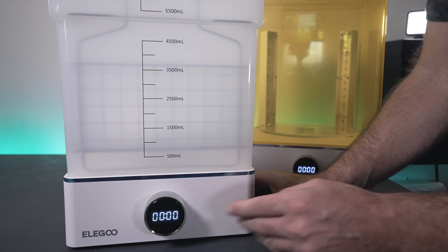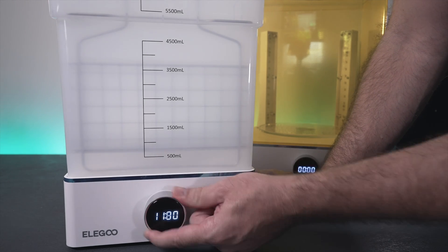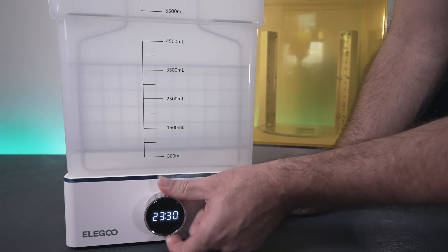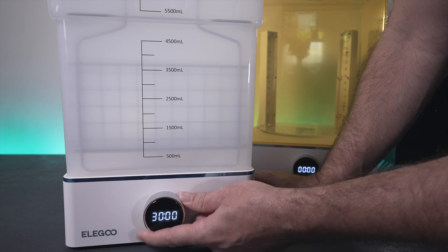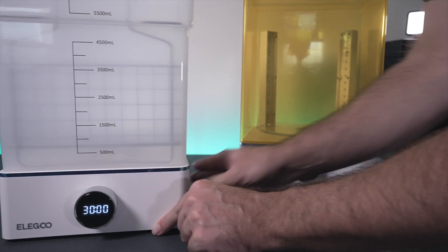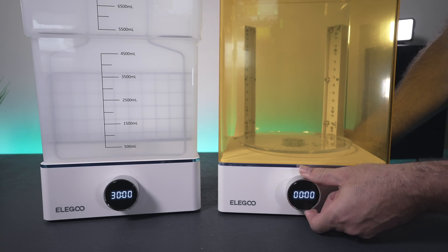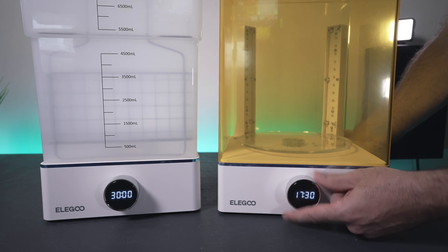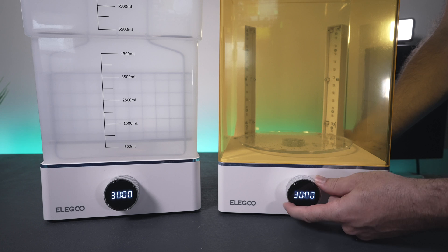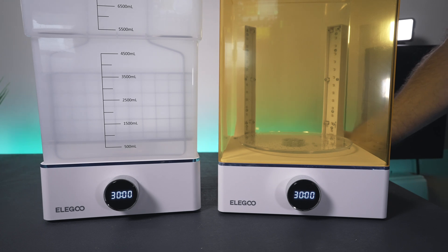I guess another thing we can see is how much is the maximum time we can add. Okay, so it's 30 minutes. So, you can add up to 30 minutes on the wash. Let's see how it is on the cure. And you guys can see it's not doing nothing because we paused it. But, yeah. I'm guessing it's gonna be the same thing. Yep, sure enough, it's 30 minutes on that too. And that should be plenty for most use cases.